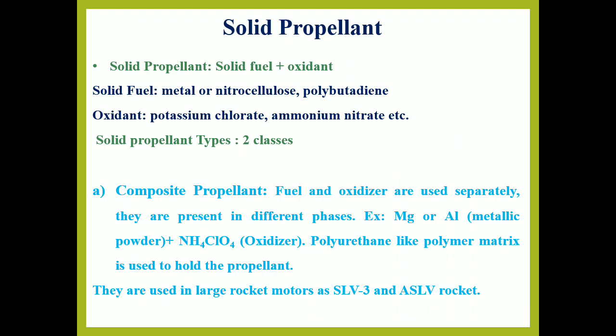Solid propellant consists of solid fuel as well as oxidant. Solid fuel can be metallic powders, nitrocellulose, or some polymer matrix. The oxidants generally used are ammonium perchlorate, potassium chlorate, ammonium nitrate, etc. The first category is composite propellant, that is heterogeneous solid propellant, in which fuel and oxidizer are used separately — both are present in different phases. For example, magnesium or aluminium can be used as fuel; ammonium perchlorate can be used as an oxidizer; and polybutadiene, acrylics, or polyurethane can be used as a polymer matrix which holds the fuel and oxidizer together.